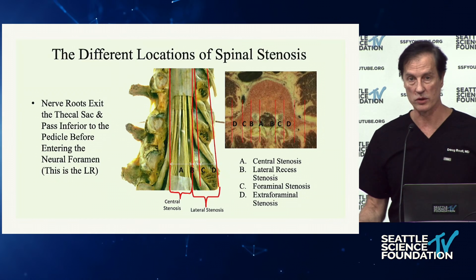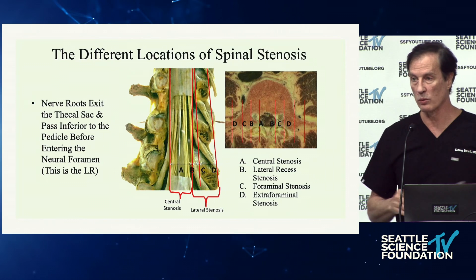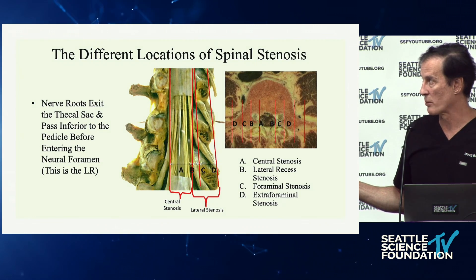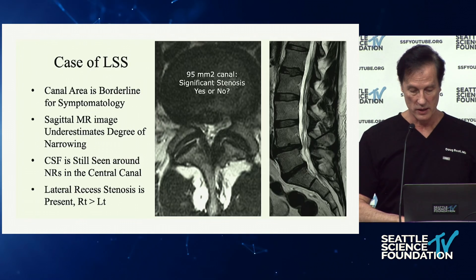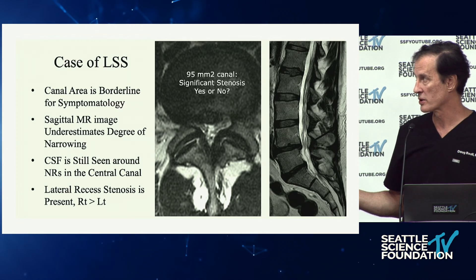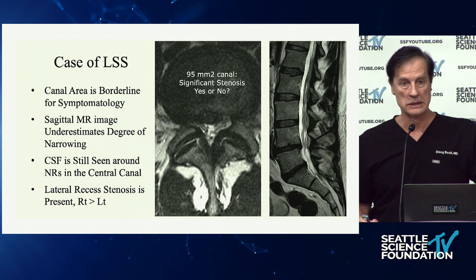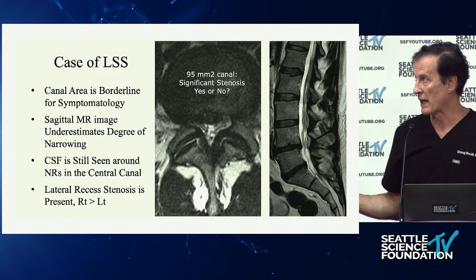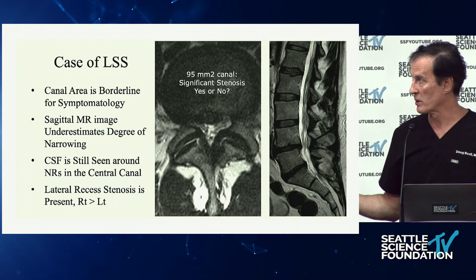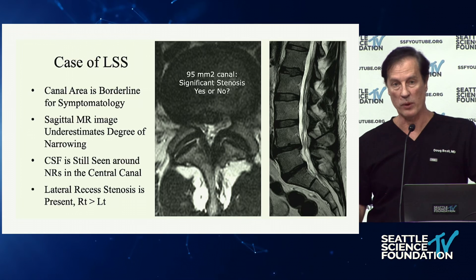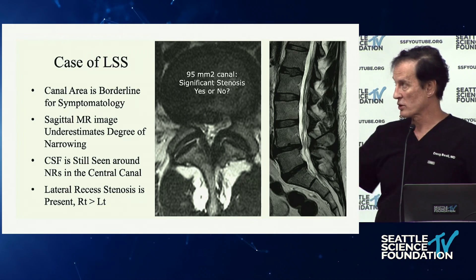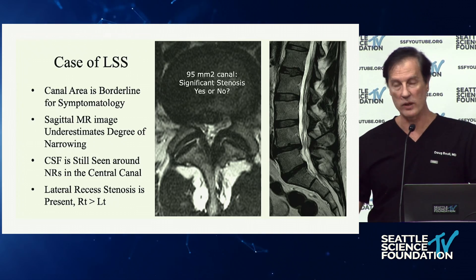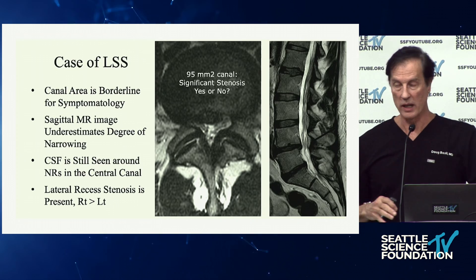The location of the spinal stenosis is important. There's the central canal, lateral recesses as the nerve exits under the pedicle, and foraminal stenosis — three primary areas. Here's a case: 95 square millimeters. Is this symptomatic? It was not, although it's pretty narrow. There's fluid around the nerve roots, lateral recess narrowing more right than left. The facets look okay; this may be a disc herniation that's resorbing. My guess: probably not symptomatic, but if symptomatic, it would be a right-sided radiculopathy that's positional dependent.